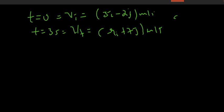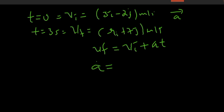Now, acceleration. Acceleration over time t: v final is equal to v initial plus acceleration times t. So, acceleration is equal to v final minus v initial, over time t.